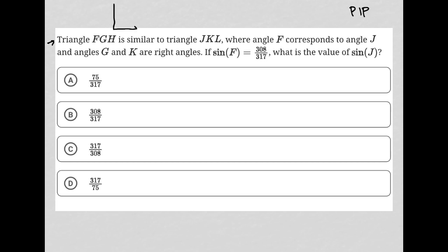So I'm going to draw right triangle FGH, starting with F here, G at the right angle like the question said, so then H is here. I'm also going to have triangle JKL in the same order — J, K, and L.